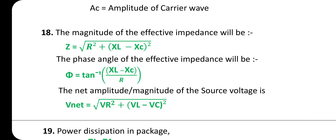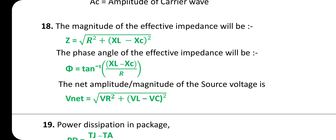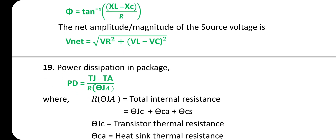Eighteenth one: The magnitude of effective impedance Z = √(R² + (X_L − X_C)²). The phase angle φ = tan⁻¹((X_L − X_C) / R). The net amplitude of the voltage source: V_net = √(V_R² + (V_L − V_C)²).